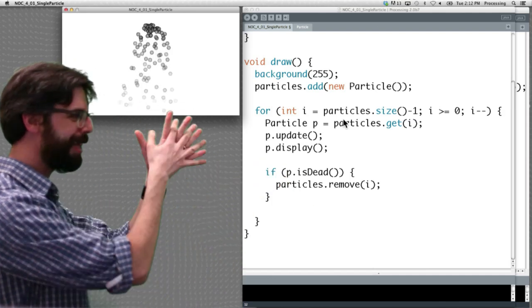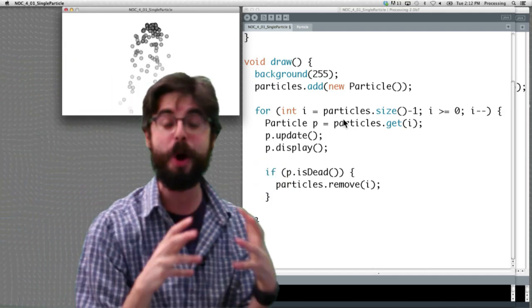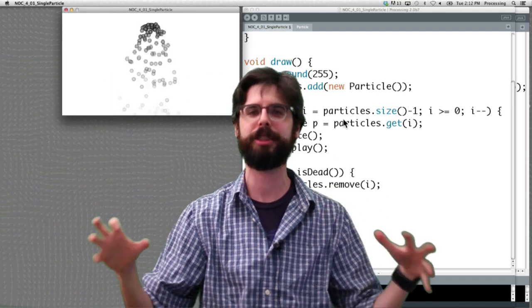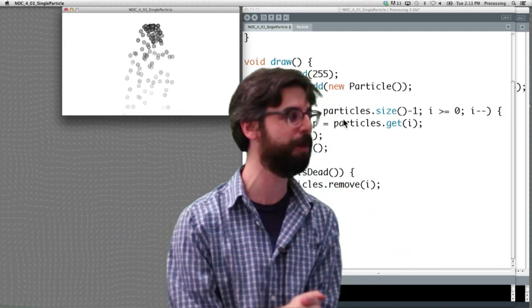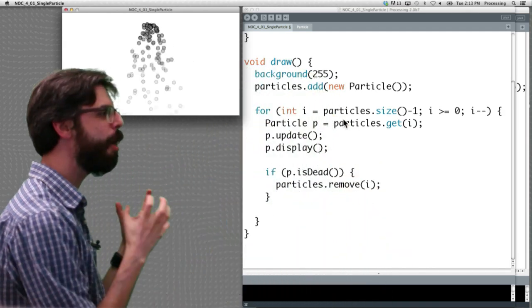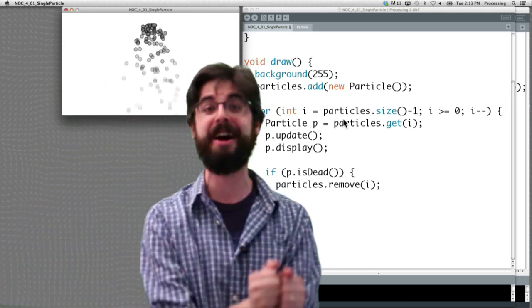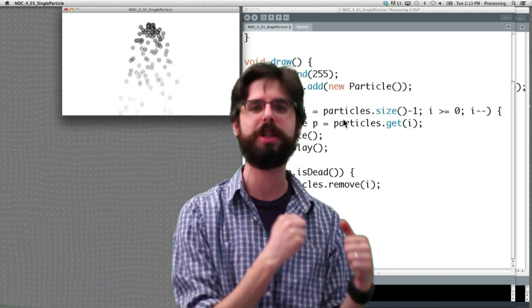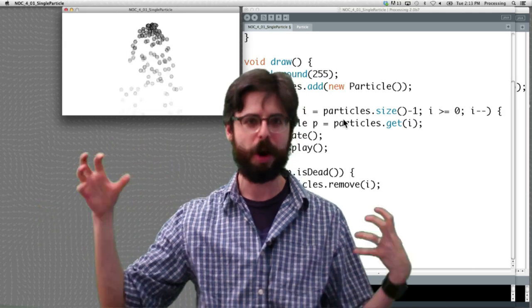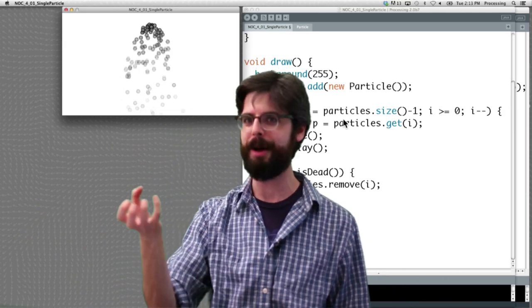But we've done it. This is exciting. We now have our particles, our basic simple particle system example. And the next step that we need to take with this is say we actually now want to encapsulate the idea of a system into its own class. That's going to allow us to have multiple particle systems.